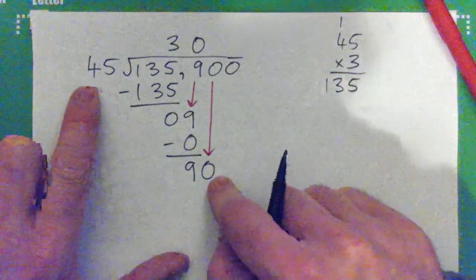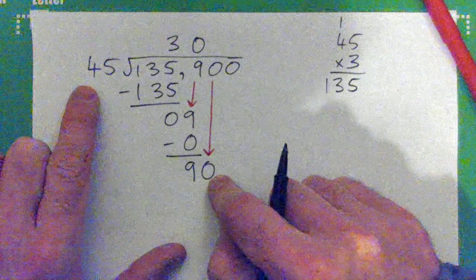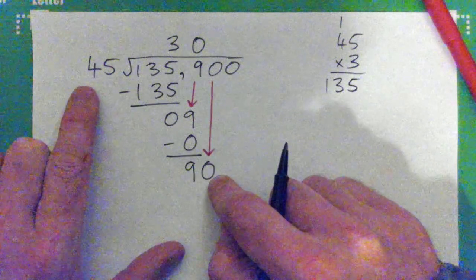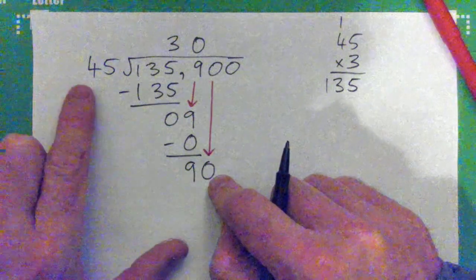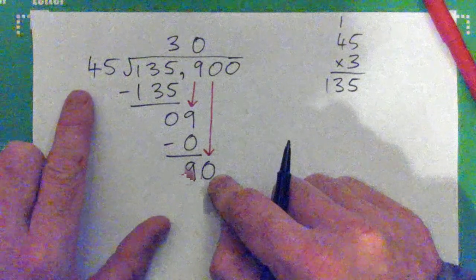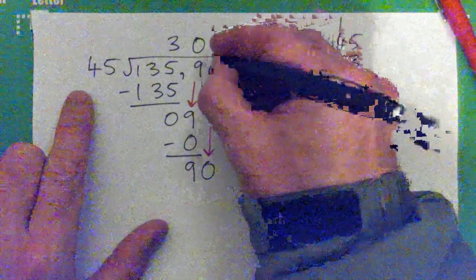So 45 into 90. Take a guess, take a guess. 2, try 2, yeah.